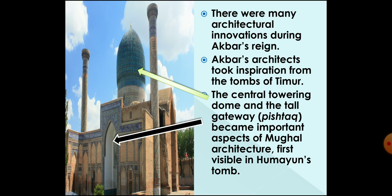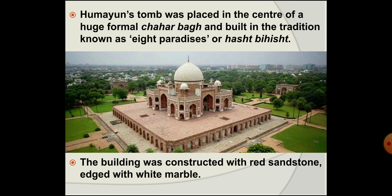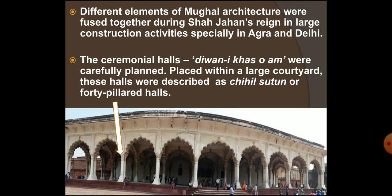Humayun's tomb was situated in the middle of a large formal Charbagh. This tomb was built in the hasht-bihisht tradition, which means eight paradises. In this hasht-bihisht tradition, a central hall was surrounded by eight rooms. Humayun's tomb was built with red sandstone and etched with white marble, which is quite clearly visible in the image in front of you.